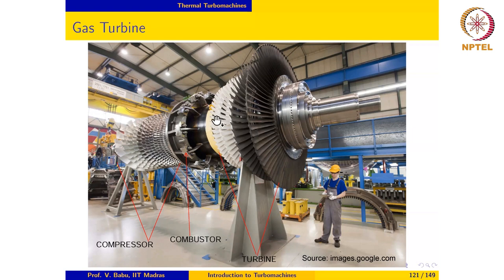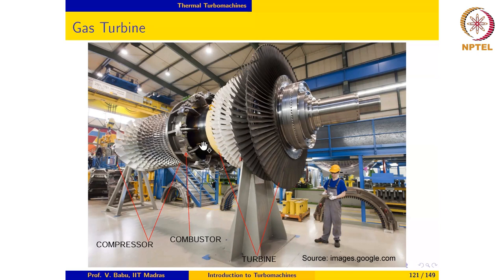Here we see the rotor of a land-based gas turbine power generation unit with the casing removed, showing only rotor blades. We see a multi-stage axial compressor with many rotor blades, followed by a combustor, and then an axial turbine. Notably, the axial turbine has far fewer stages than the compressor.